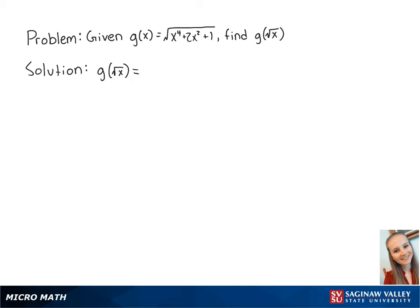For this problem, we want to find g of the square root of x, when g of x equals the square root of x to the fourth plus 2x squared plus 1. To find g of the square root of x, we need to plug in the square root of x for x.